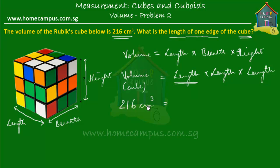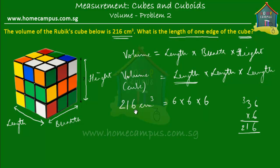How about six? Six times six is 36, and 36 times six: six times six is 36, six and three carried over, six times three is 18, 18 plus three is 21. So six times six times six gives you 216. The length of the cube is six centimeters. This is one way of doing it — the guess and check. This is method number one.